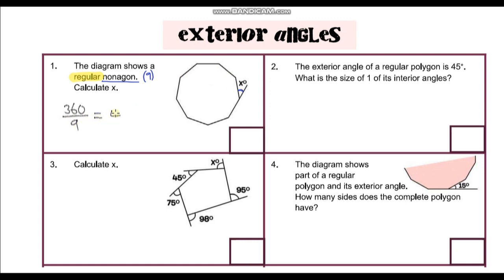360 divided by 9 gives us 40 degrees, so our answer is 40 degrees.